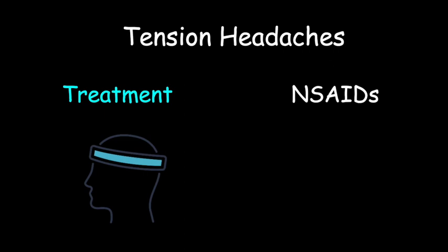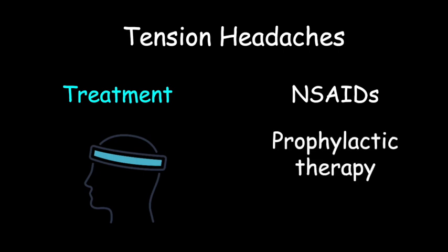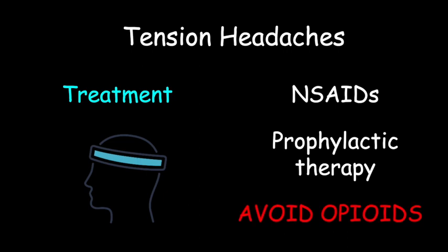NSAIDs can be used to stop the headache; however, you also have options to prevent it from occurring — this is prophylactic therapy. Patients can be tried on medications such as amitriptyline. It's also very important to note that opioids are generally avoided in the management of headaches. That brings us to the end of our discussion about tension headaches.